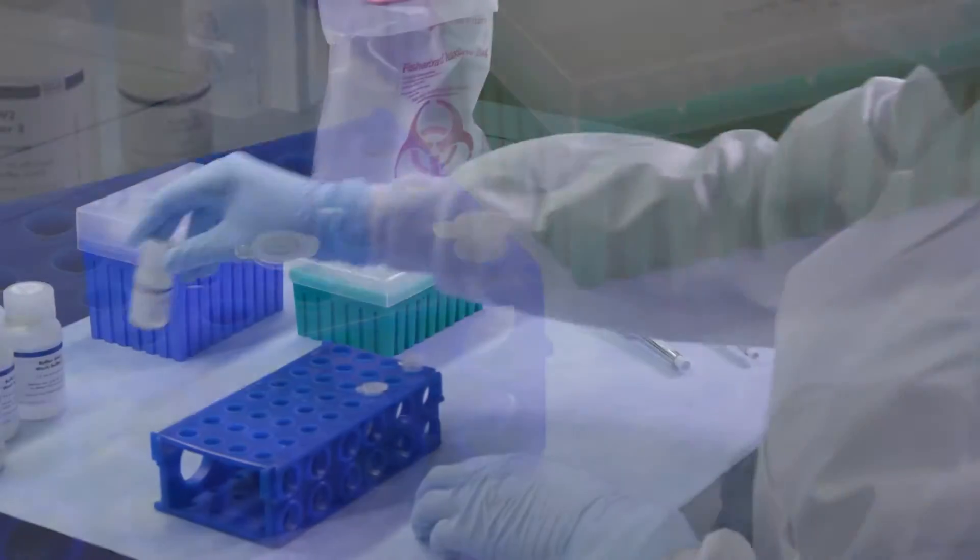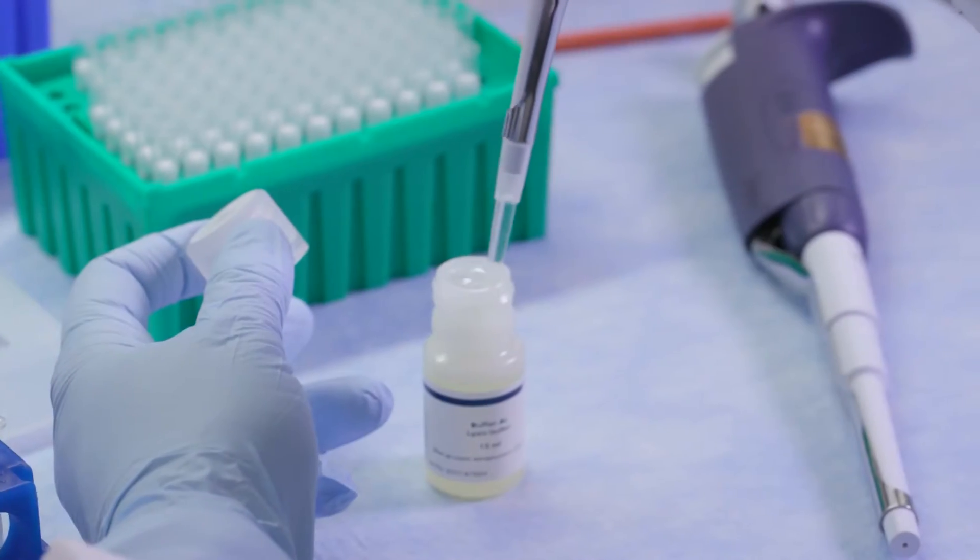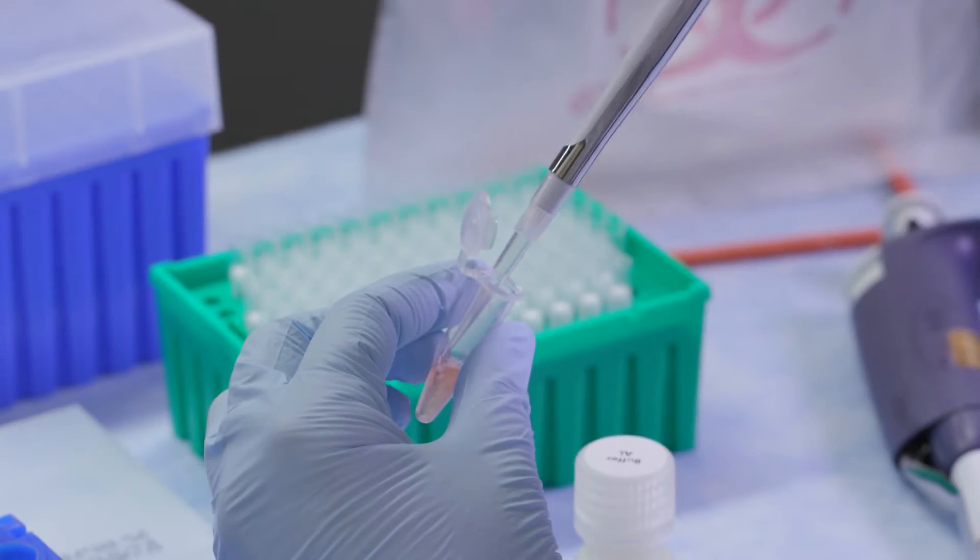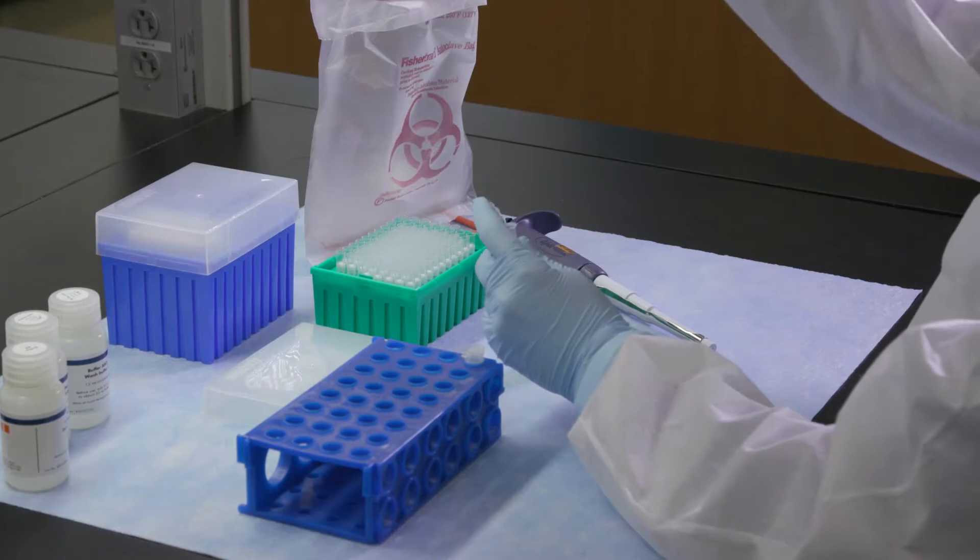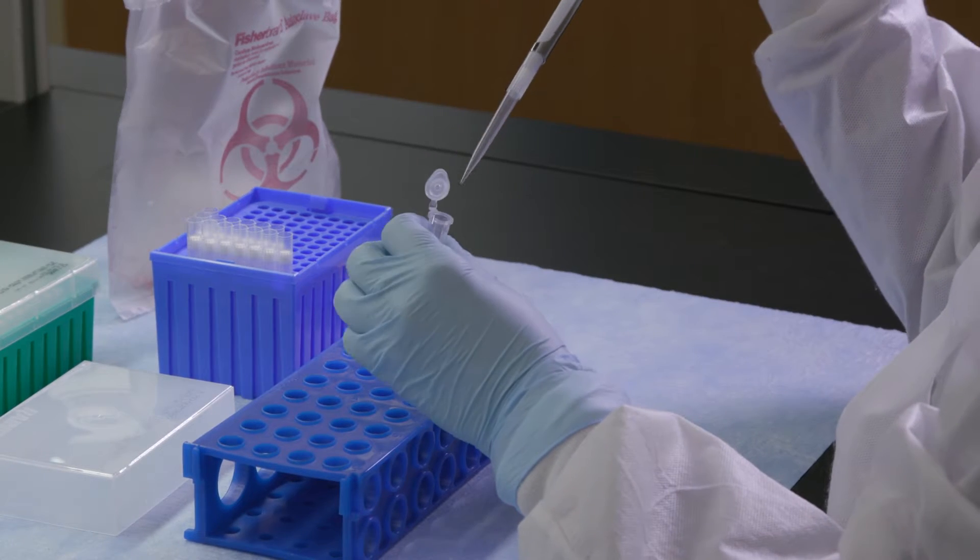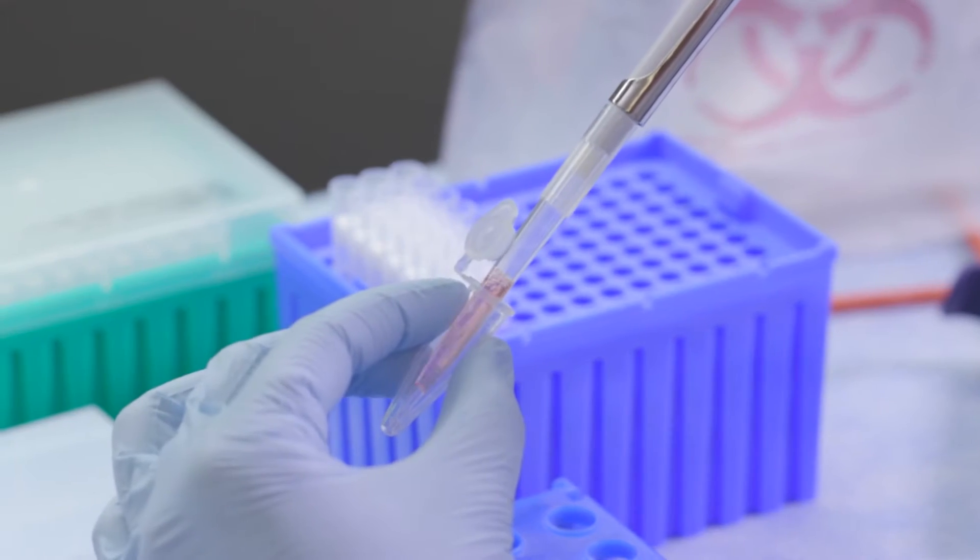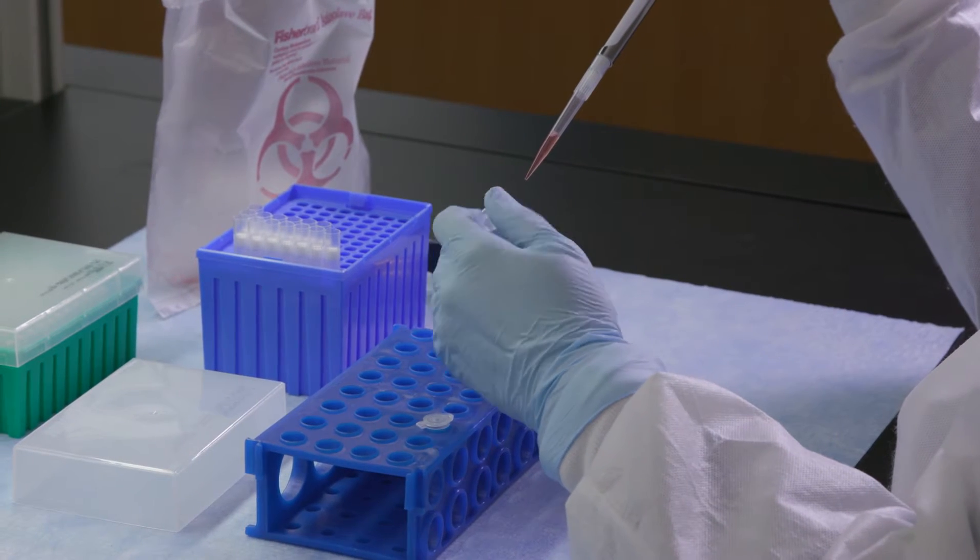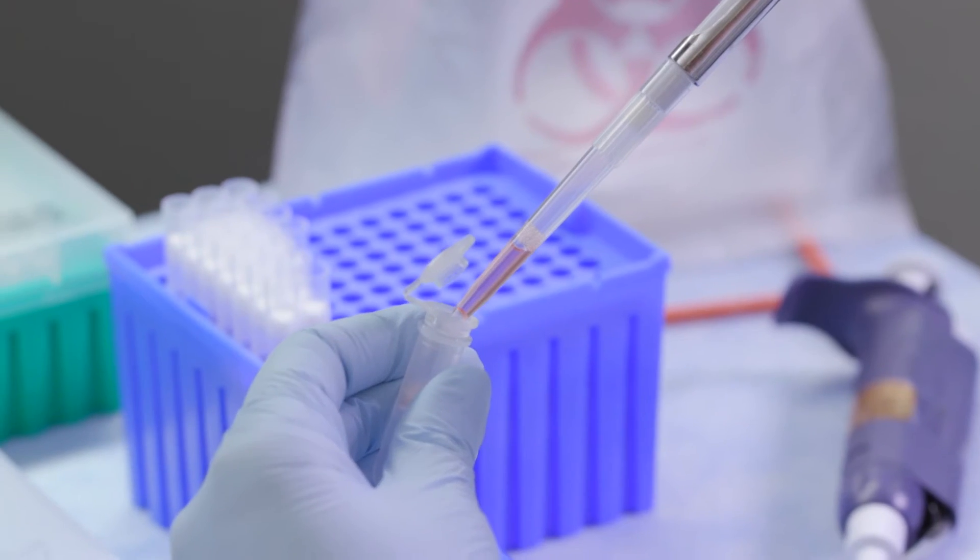After lysis, apply cell lysate to a column in the presence of a high salt buffer allowing nucleic acid and nucleic acid binding proteins to absorb to the matrix. Other cellular components and proteins do not bind to the matrix and pass through the column as the lysate is applied.